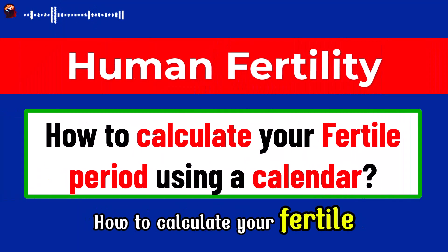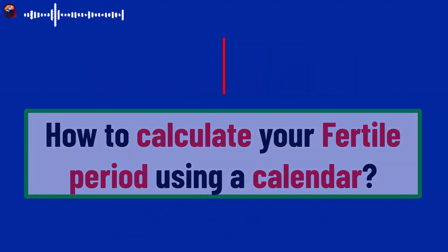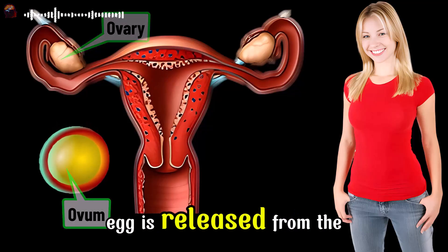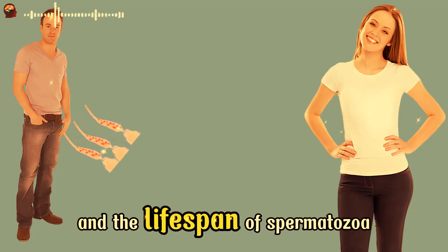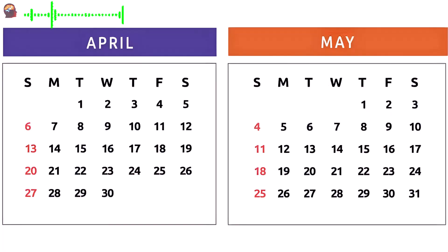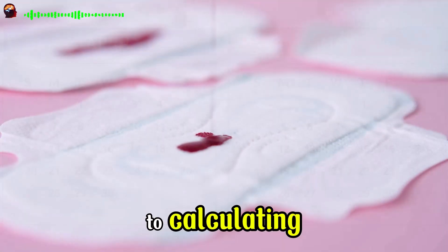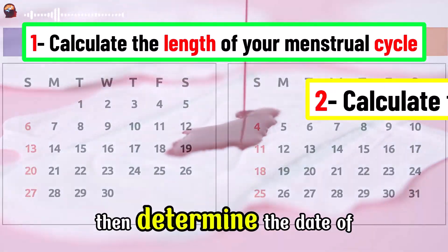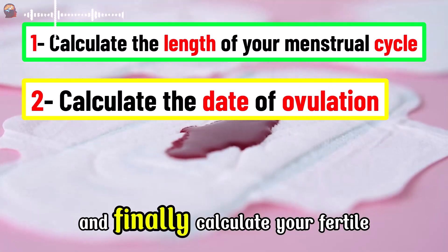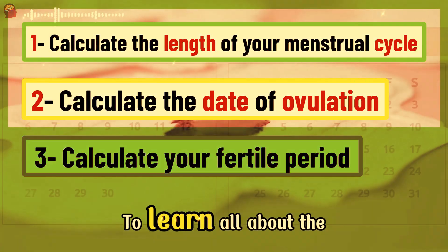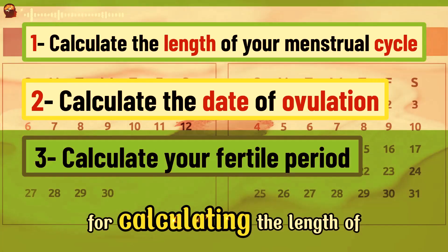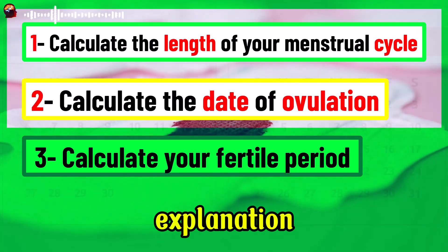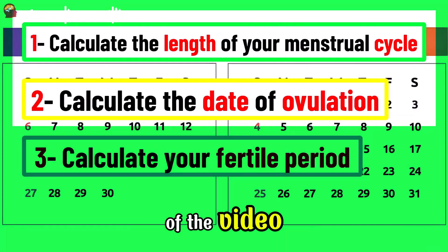How to calculate your fertile period using a calendar? The fertile period is linked to ovulation, which is the moment the egg is released from the ovary, and the lifespan of spermatozoa in men and eggs in women. Here are the key steps: first, calculate the length of your menstrual cycle; then determine the date of ovulation; and finally, calculate your fertile period. The link to the detailed explanation is indicated at the bottom of the video in the description.